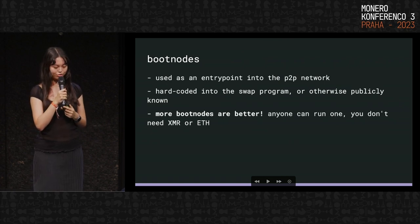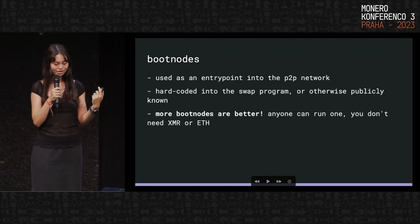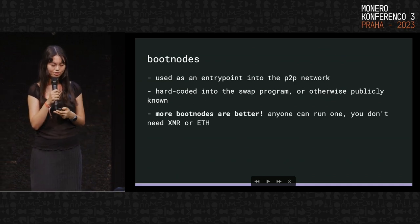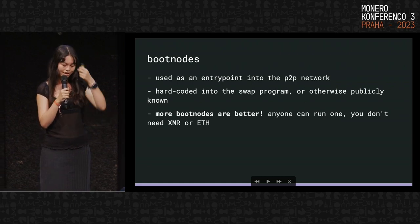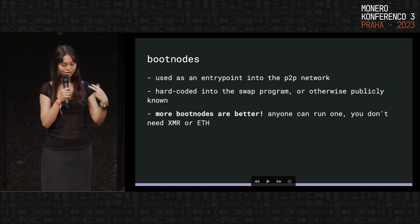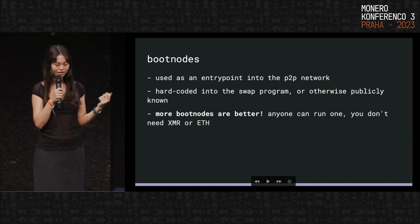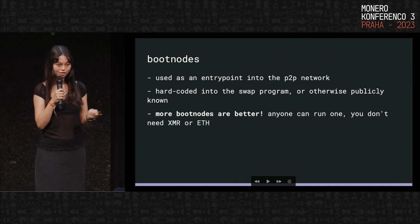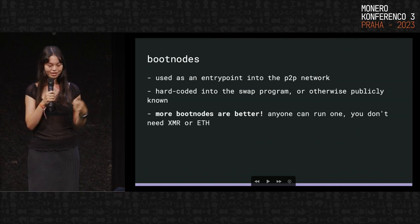Boot nodes are used as an entry point into the P2P network. Every peer-to-peer network needs to have hard-coded addresses that the node will connect to on startup to enter the network, otherwise you just can't get in. They have to be publicly known or hard-coded. It's also recommended if you want to run a boot node — you don't need any funds, you don't need to do anything. It's literally just running a node that helps with the decentralization of the system, and more boot nodes is better in case any of them go down.